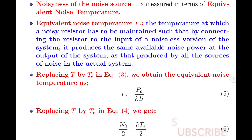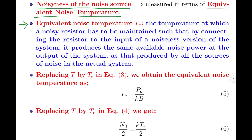It should be noted that the noisiness of a noise source is often measured in terms of the equivalent noise temperature. Equivalent noise temperature is defined as the temperature at which a noisy resistor must be maintained such that, by connecting the resistor to the input of a noiseless version of the system, it produces the same available noise power at the output as that produced by all sources of noise in the actual system.